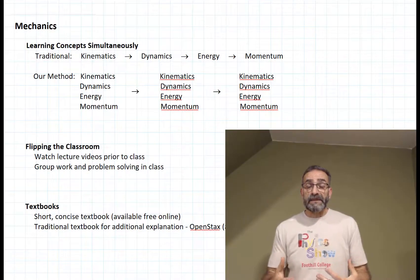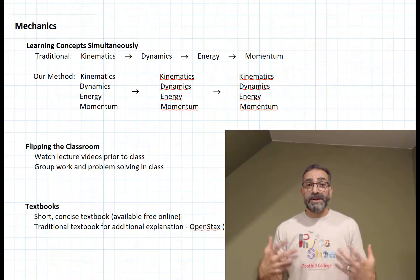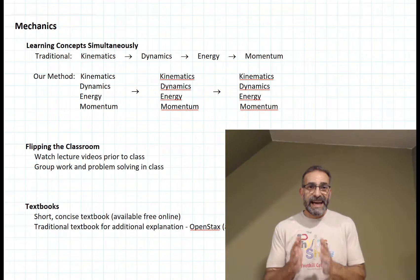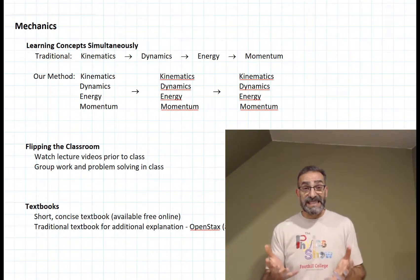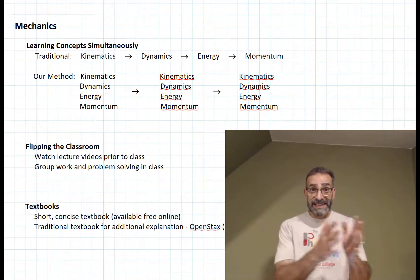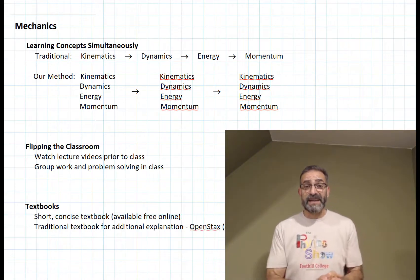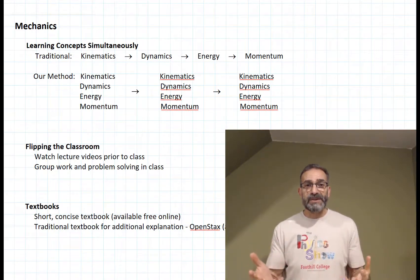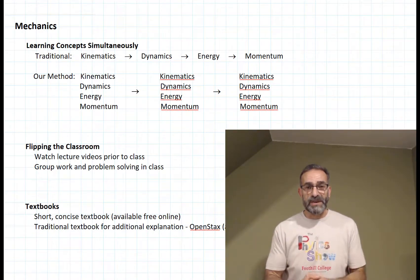The idea here is that this is a much more natural way to learn something, and it helps with a huge pitfall that physics students deal with when they learn in this linear way that's traditional. And that is, how do you know which approach to use when you're solving a certain problem?